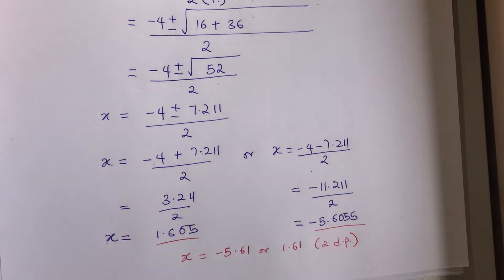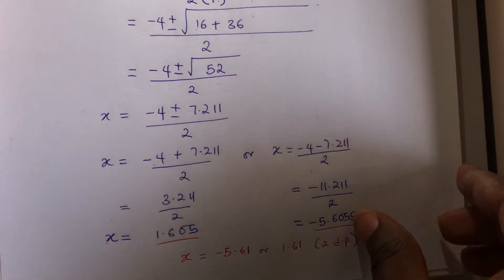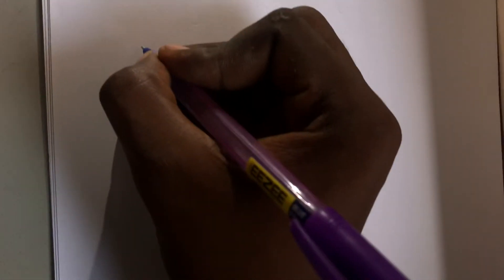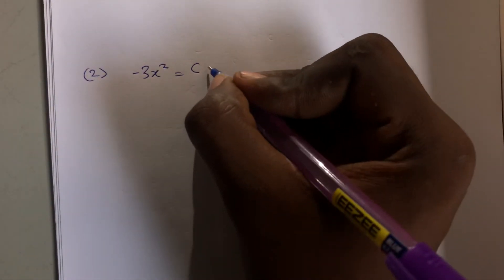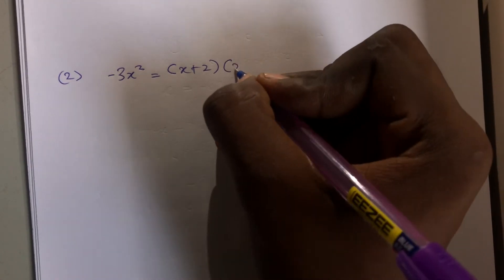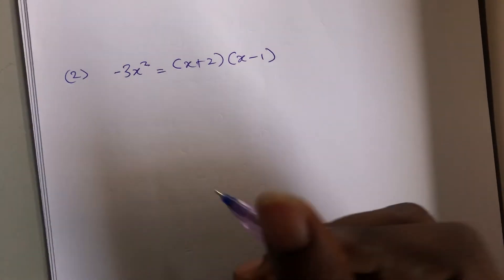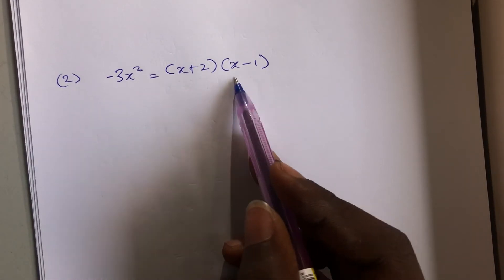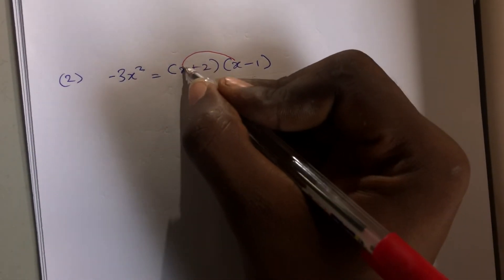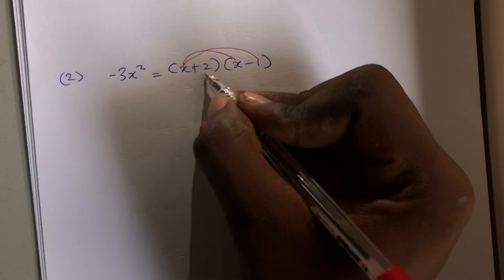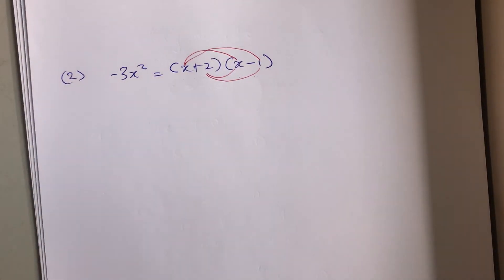All right, now go on and solve the second one. So our second equation is minus 3x squared equals x plus 2 times x minus 1. The first thing we have to do is obviously to open this bracket. This is going to multiply this, then it will multiply minus 1, also 2 is going to multiply x then multiply minus 1.